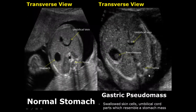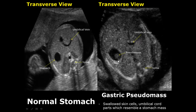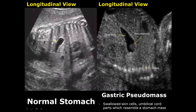A gastric pseudomass occurs when the fetus swallows skin cells, umbilical cord parts, or even blood, which may resemble a stomach mass. But it is not a stomach mass — these are just swallowed materials which look like a mass or a tumor. Here is a longitudinal view of the stomach; it appears elongated and here is the fetal spine. The stomach is simply fluid-filled and there is no swallowed material.